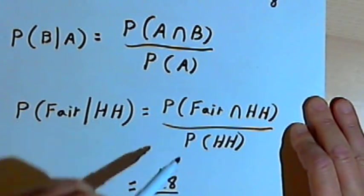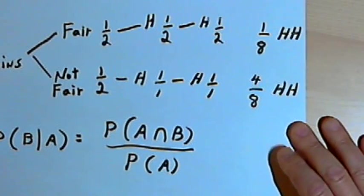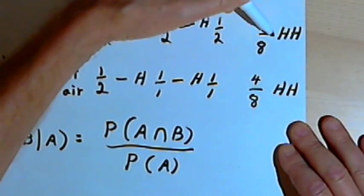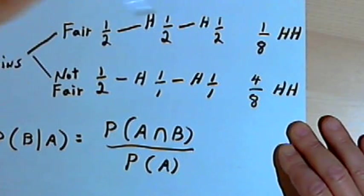I want the probability also of getting two heads in a row. Well, the total probability of getting two heads in a row would be the probability of getting two heads in a row from both branches of the tree. I had 1 eighth and 4 eighths. So the probability of getting two heads in a row is 5 over 8.